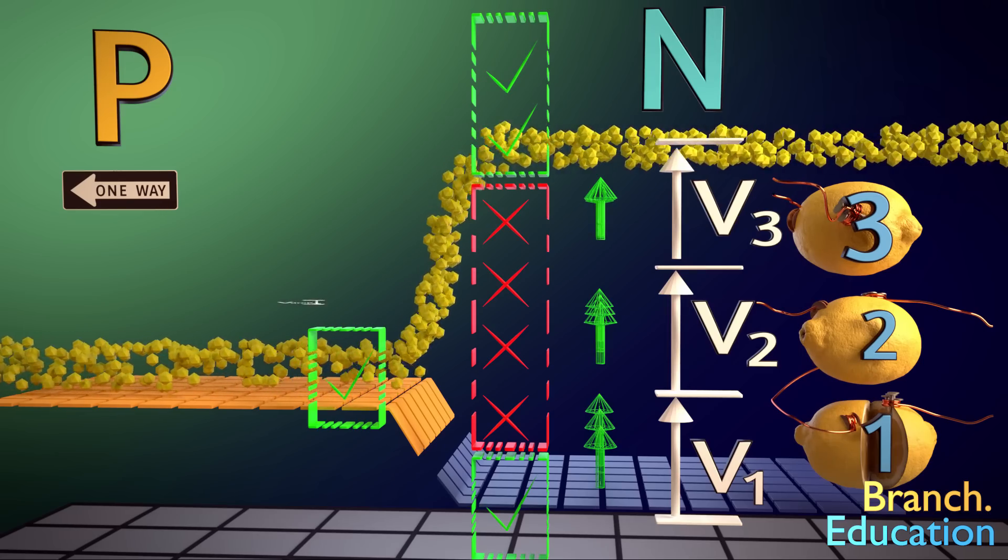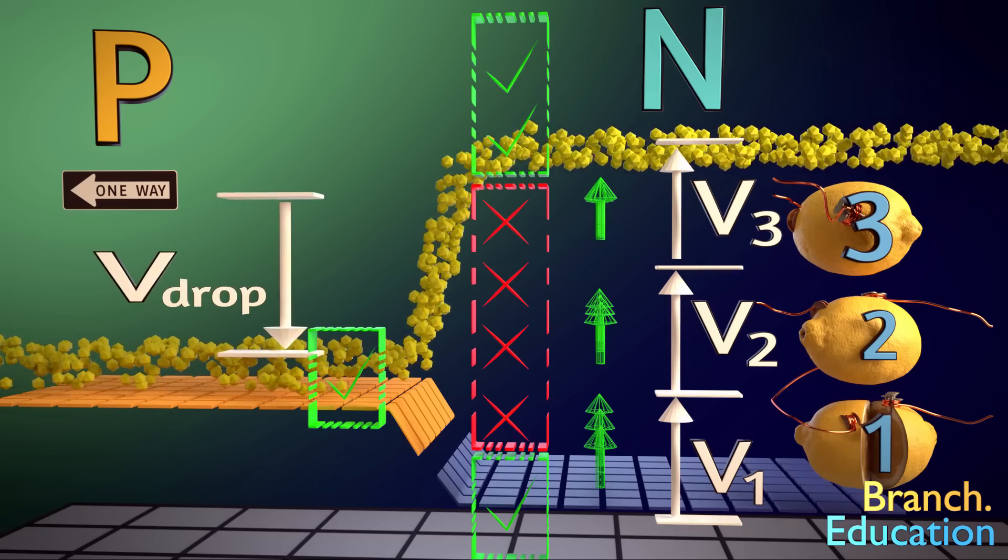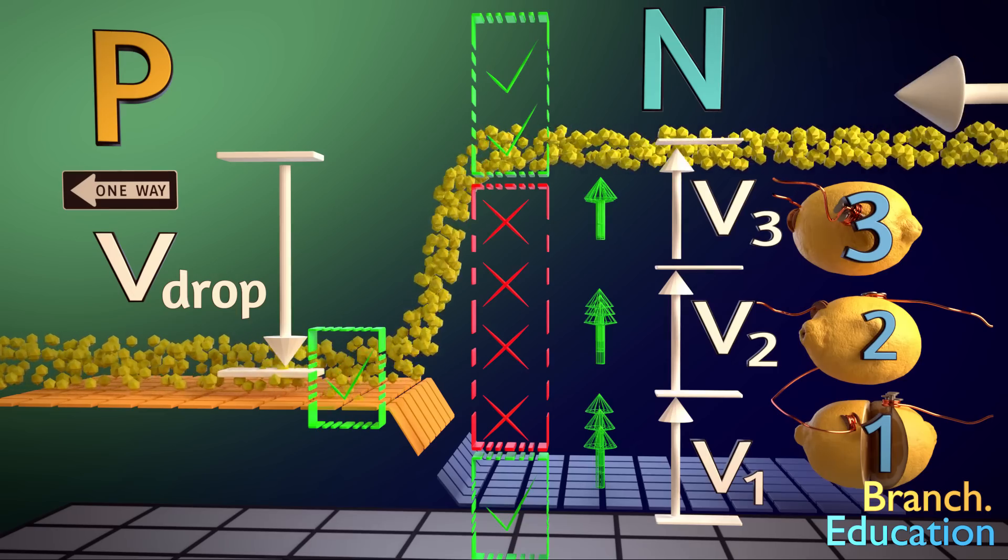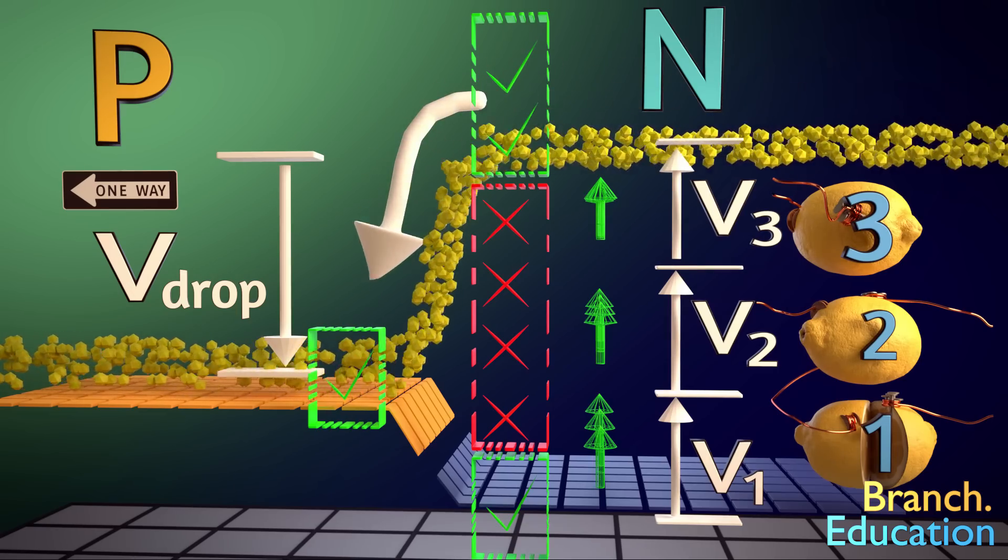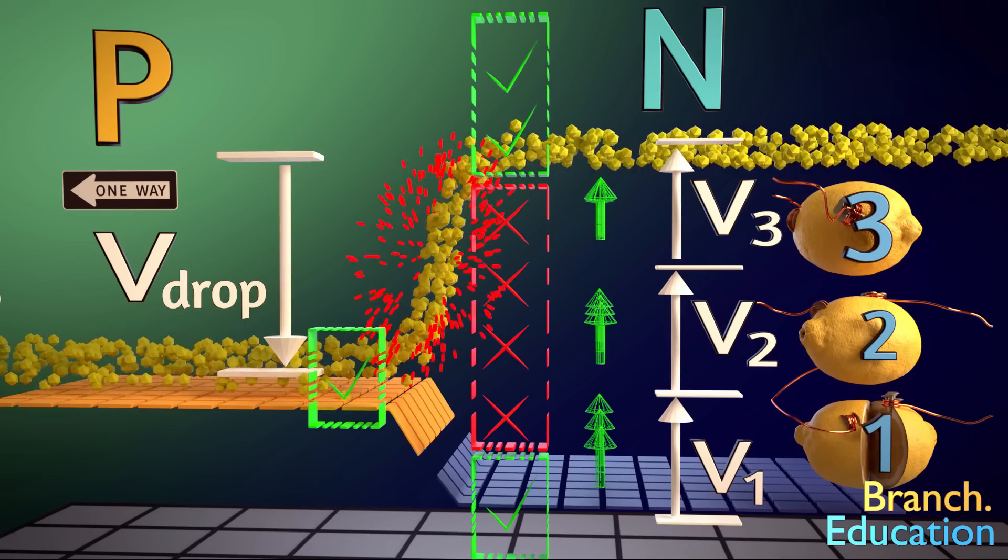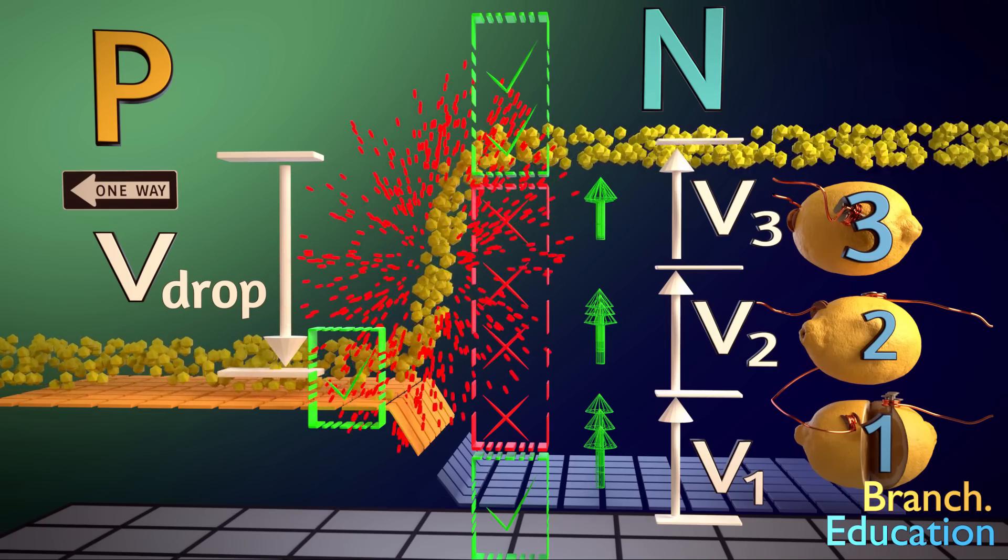But now, since N has a much higher height than P, you can see there is a big drop for electrons from their height in material N to their height in material P. As a result, the electrons drop from this height down to here, and when it does, the difference in energy level is released as photons or light. And that's where the light is coming from.